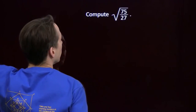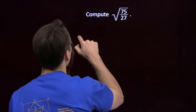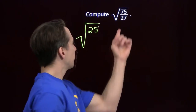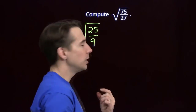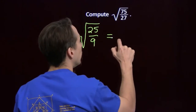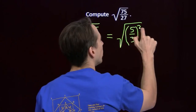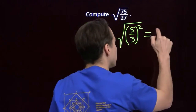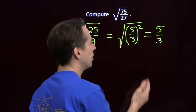Let's try another problem. I've got a square root of a fraction here. We can simplify the fraction first — we've got a common factor of 3 we can take out of 75 and 27. Taking a factor of 3 out of 75 leaves 25, and out of 27 leaves 9, so 75 over 27 equals 25 over 9. These are both perfect squares. We can write 25 over 9 as the square of 5 thirds, because 5 squared is 25 and 3 squared is 9. The square root of the square of 5 thirds is just 5 thirds.